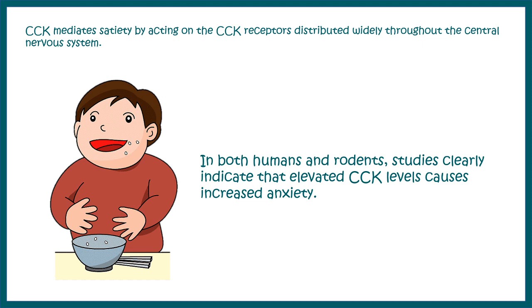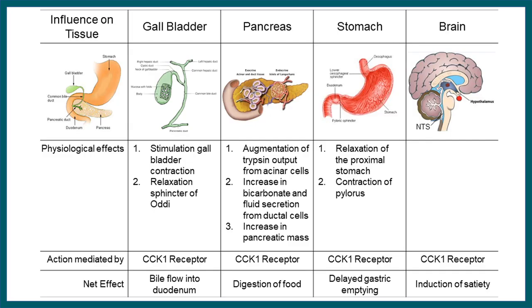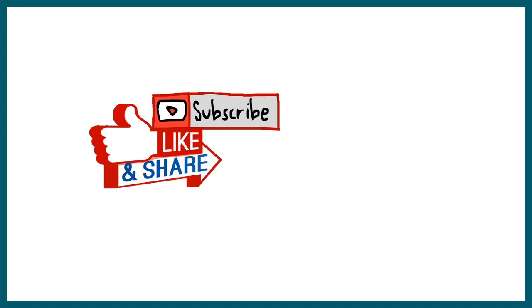A comprehensive summary table is provided — you can take a screenshot as a useful flashcard for your preparation. In summary, cholecystokinin has widespread effects on the stomach, gallbladder, pancreas, and even the brain, making it a very important hormone for digestion and absorption.